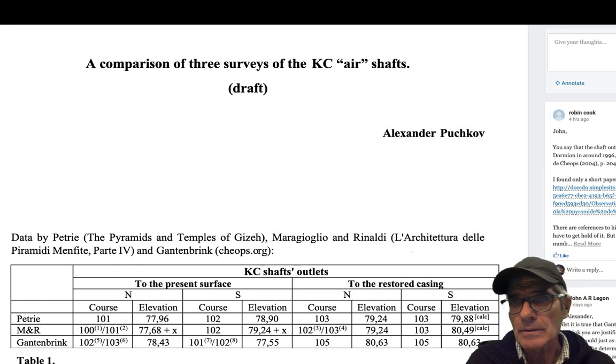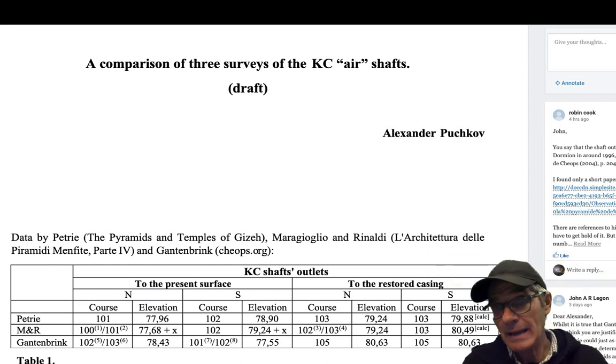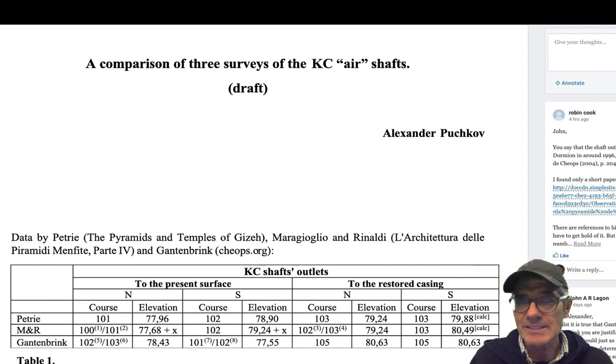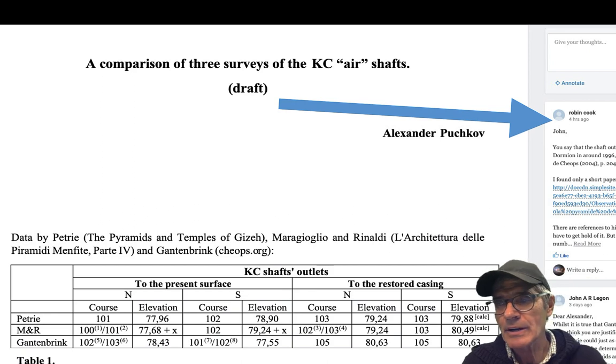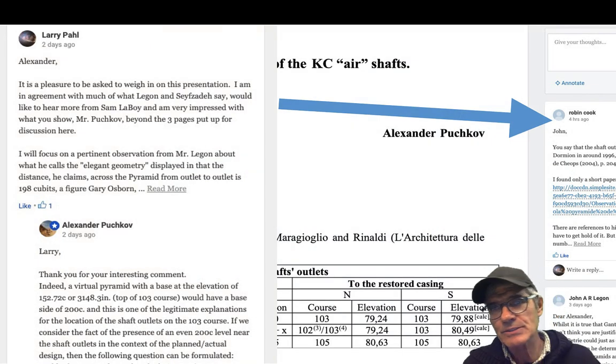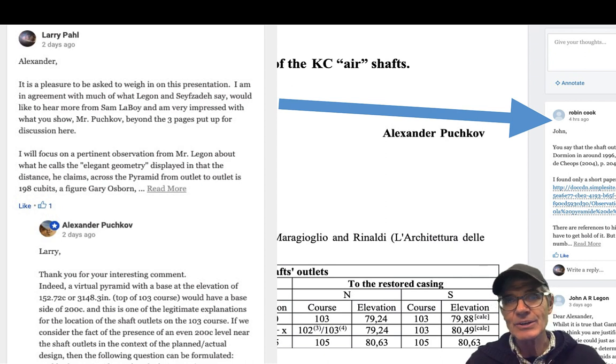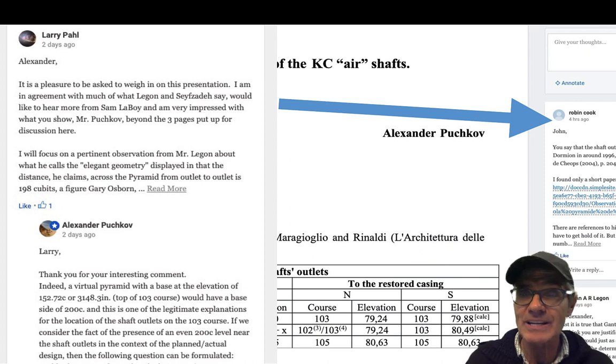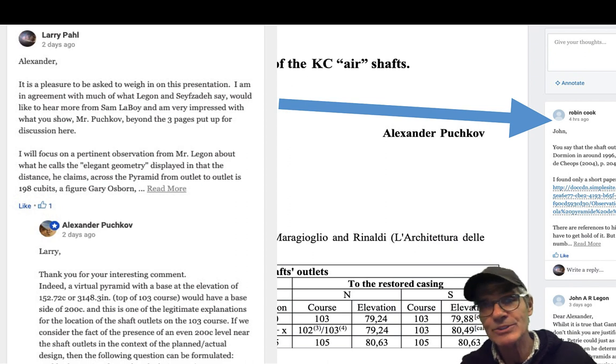Here is a paper by a great researcher with the pyramid and other things, Alexander Puchkov, and he's dealing in this article with the surveys - the three major surveys of the King's Chamber air shafts. That would be Flinders Petrie, and then Gantenbrink, and then Maragioglio and Rinaldi. Those three surveys. You can see over here that comments are made by various academics when something's put out for draft, like Alexander Puchkov did. I was asked to weigh in on this, so I did. I wrote a long piece - you don't see all of it there, but you see my name in the upper left-hand corner. Alexander Puchkov wrote back to me, and he said basically the 200-cubit level - if we consider the fact of the presence of an even 200-cubit level near the shaft outlets in the context of the planned actual design, it can be one of the legitimate explanations for the exit of the air shafts at the 103rd course, because it comes out to an even 200 cubits. That's my point. Hemiunu, who's the designer of the Great Pyramid, made it come that way.